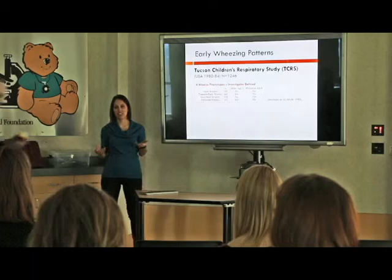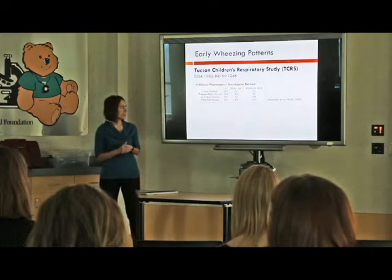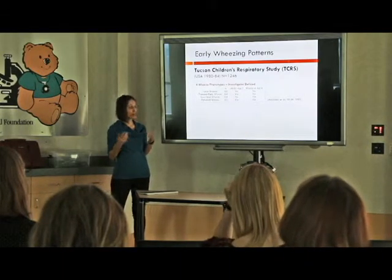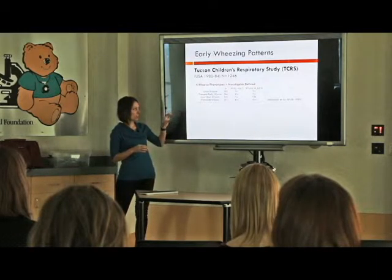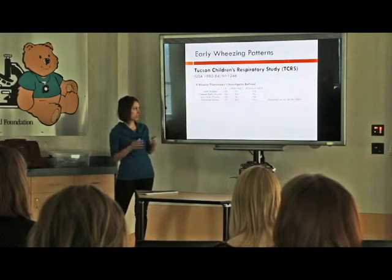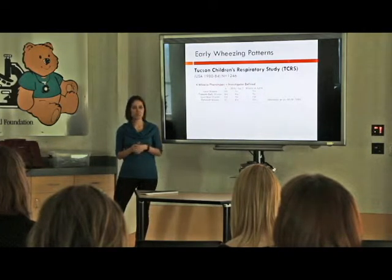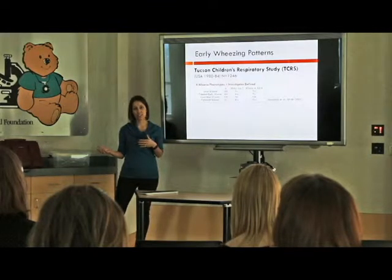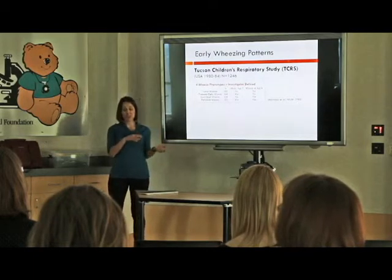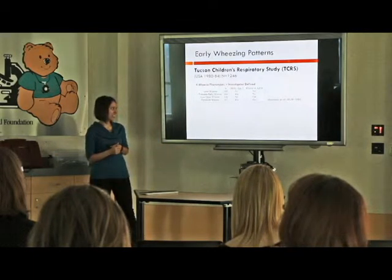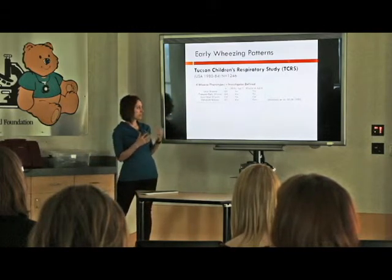The children were classified based on what investigators thought might be important phenotypes, looking primarily at age 3 and age 6. Never wheezing meant no wheezing throughout early childhood. If a child wheezed before age 3 but not at age 6, that was transient early wheezing. Late onset would be no wheezing in early life but then wheezing at age 6, while persistent wheezing would be wheezing throughout.